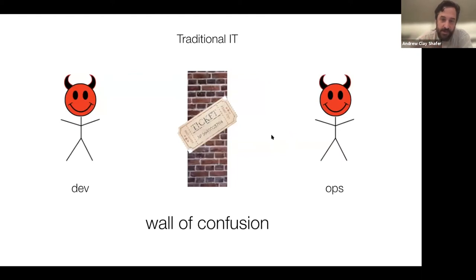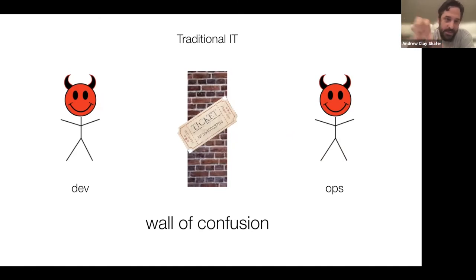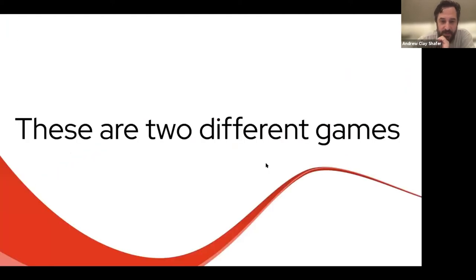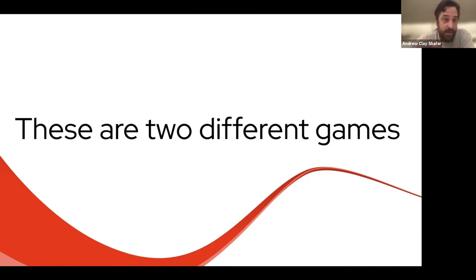This is the classic DevOps framing of what came to be known as the wall of confusion. In traditional IT, you communicate through ticket systems, you don't even see each other as human — it makes people mischievous. But revisiting this through a different lens: part of what's happening here is that these are two different games. People are playing different games, trying to win the game they're playing, and maybe don't have an understanding or connection to the other one.